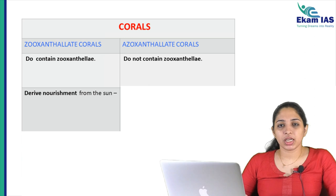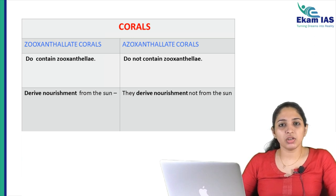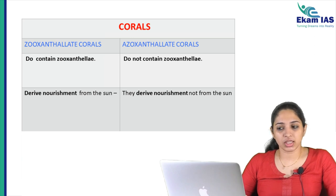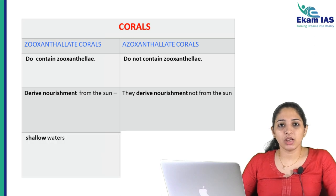Azooxanthellate corals do not contain Zooxanthellae — the photosynthetic brown algae is absent in their structure. They depend on planktons, which are microorganisms found in the ocean. Zooxanthellate corals derive nutrition from the sun through algae that require sunlight for photosynthesis, so they live in shallow waters. Whereas Azooxanthellate corals depend on microorganisms like planktons for food, so they live in the deep sea.